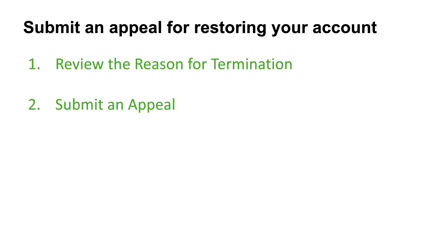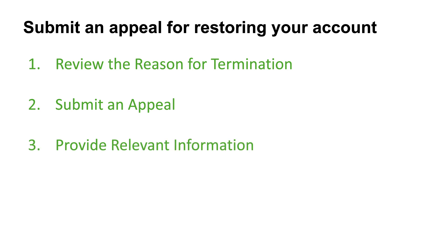The second step is to submit an appeal. If you believe your account was terminated in error, or if you have resolved the issues that led to termination, you can submit an appeal to Google by following the instructions in the termination notification or contacting the Google Play Developer account support team. When submitting, provide all relevant information — an explanation of the issues, steps you have taken to address them, and any details that demonstrate your commitment to complying with Google's policies.